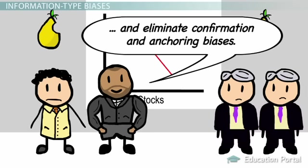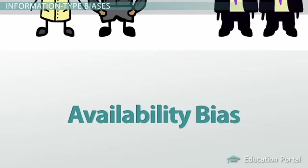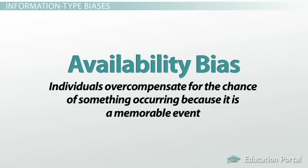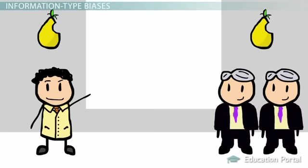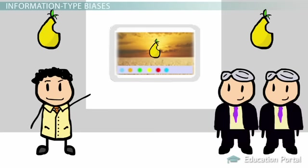Finally, the consultant found availability bias, which is when individuals overcompensate for the chance of something occurring because it is a memorable event, making it the first available thing you think of. Pair Products felt that any product with their logo would be successful because in the past, each new product launch brought in rave reviews and big profits.